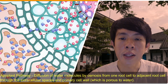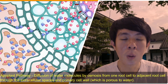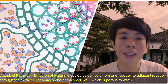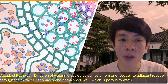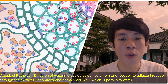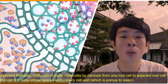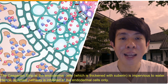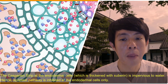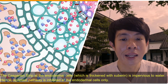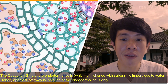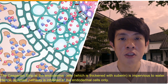In the apoplast pathway, look carefully how water diffuses by osmosis down the water potential gradient from one root cell to another via the cell wall and extracellular spaces. But this pathway is blocked at the endodermal cells. The Casparian strip contains suberin, which is impervious to water.